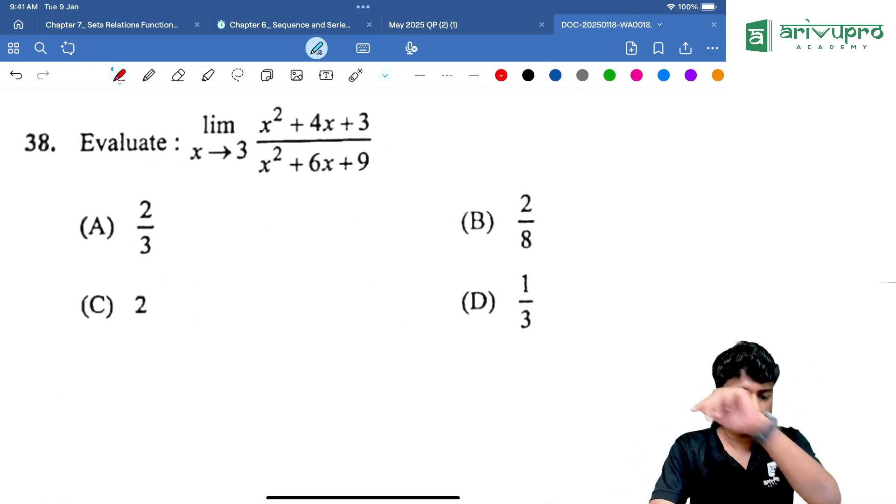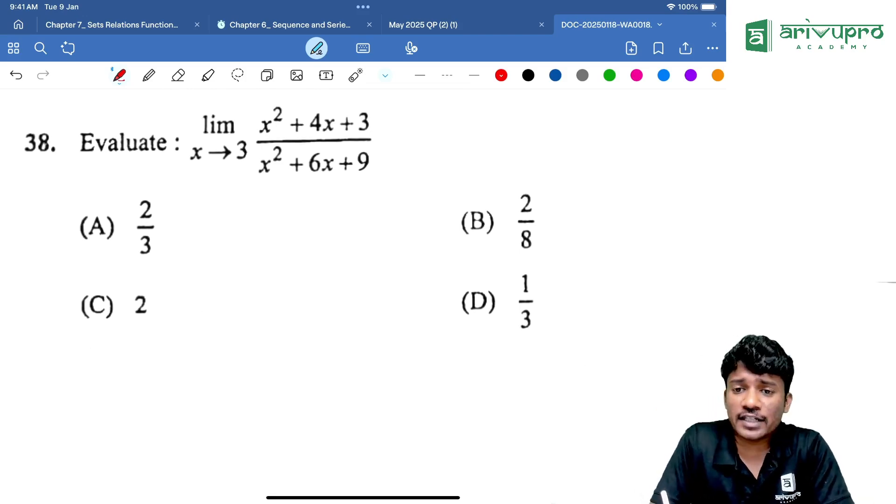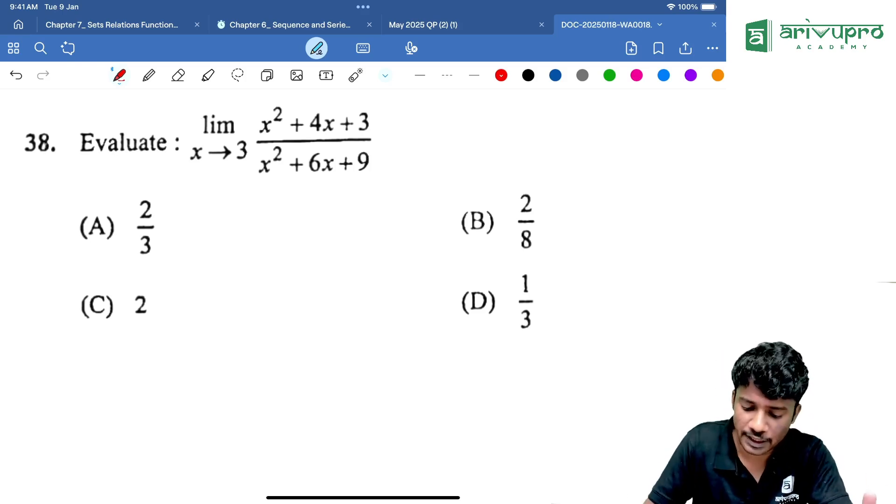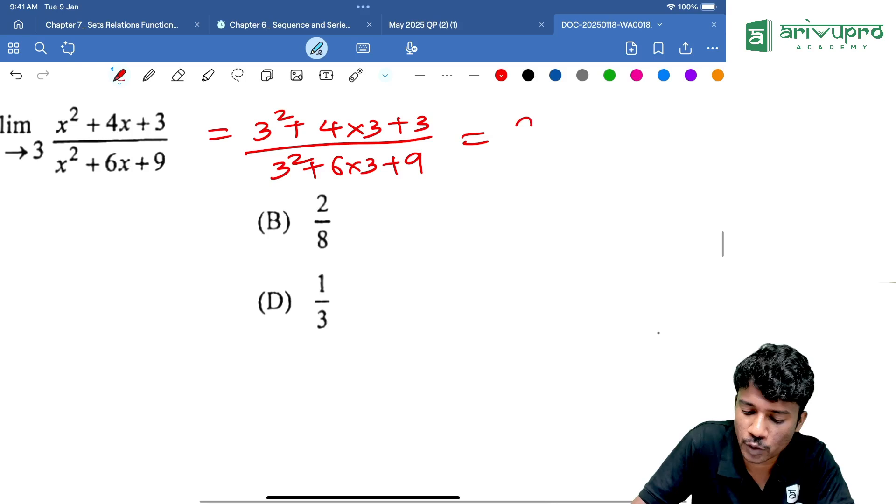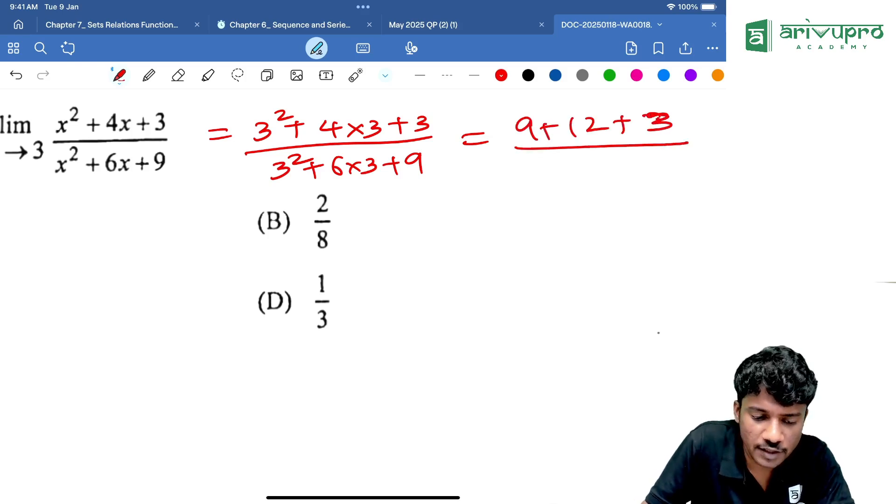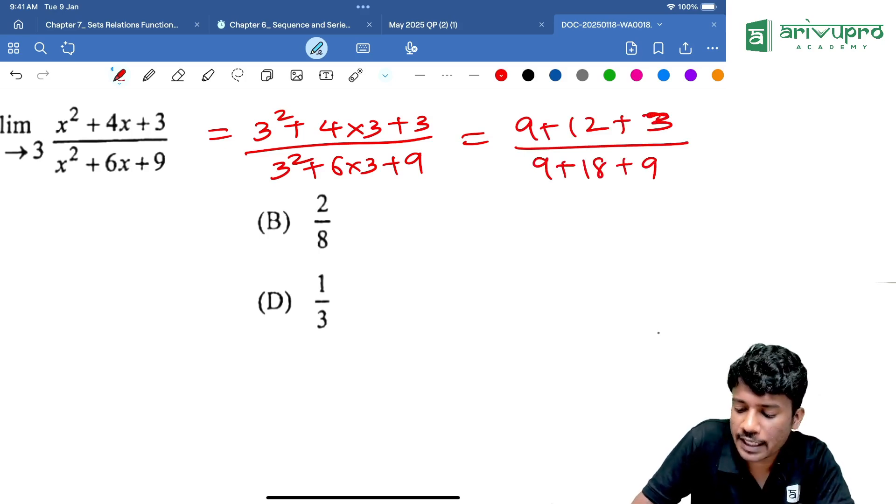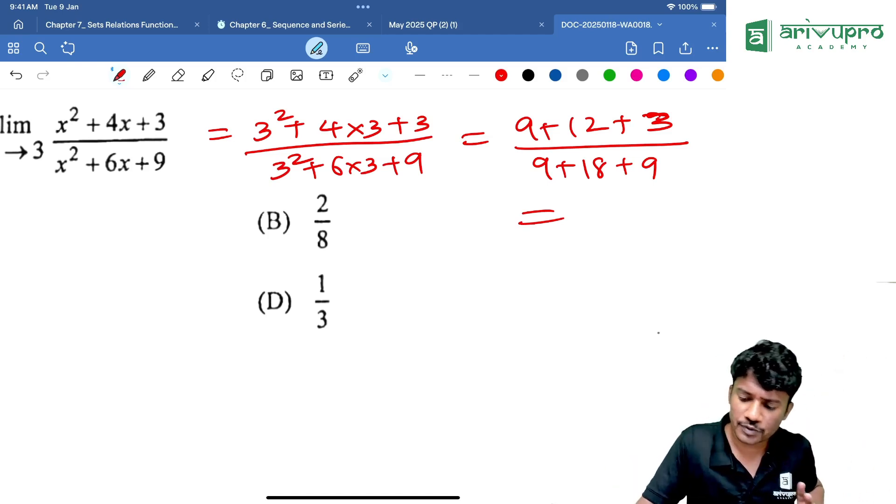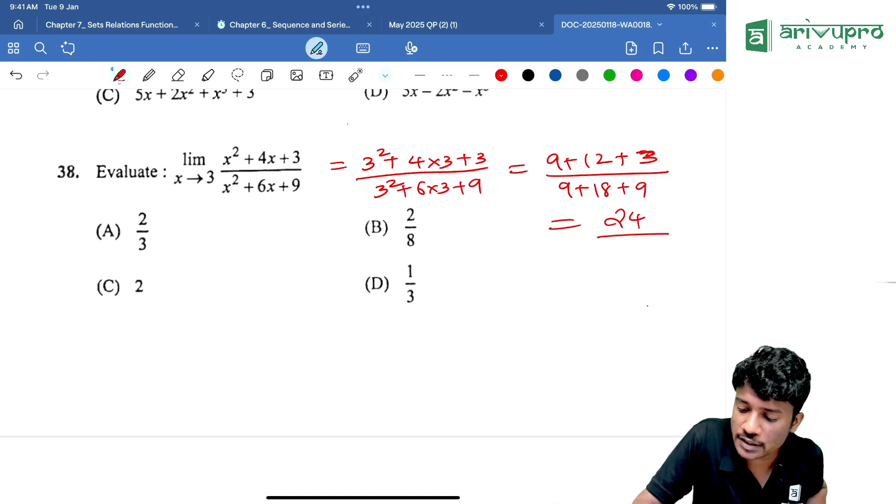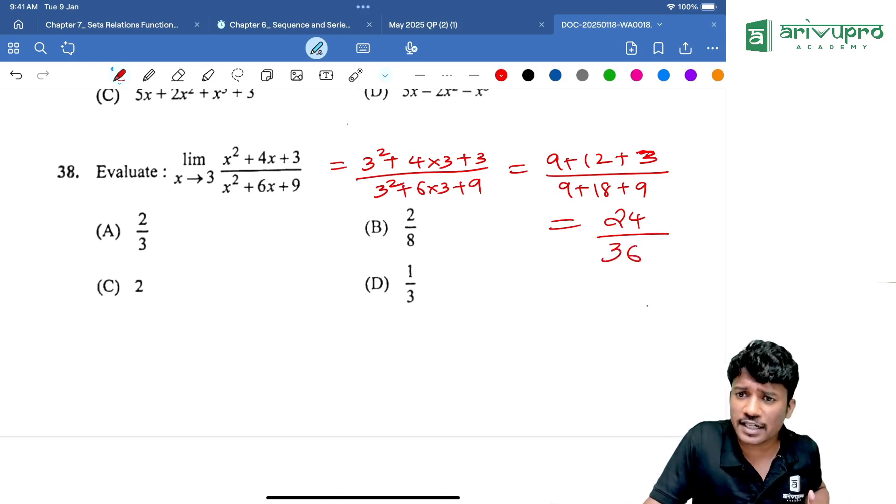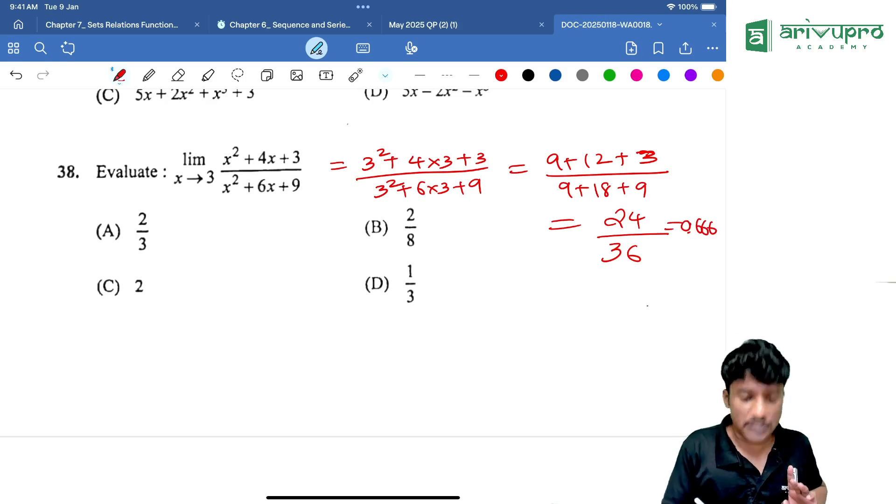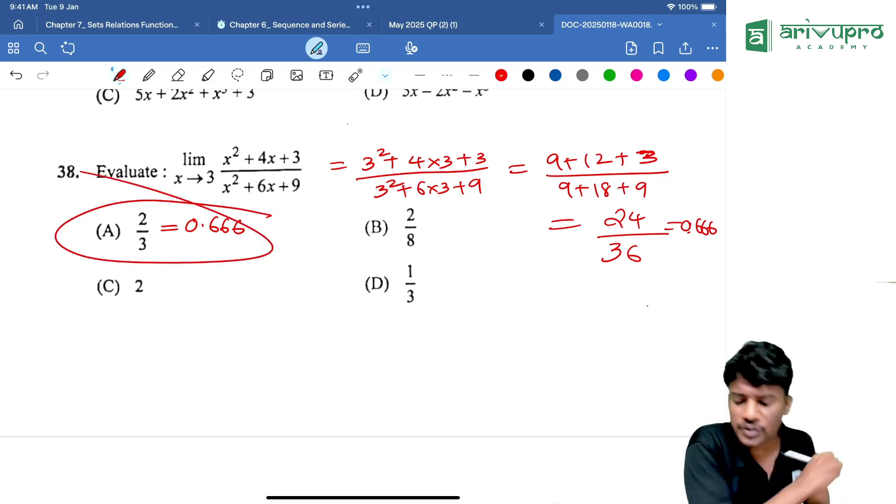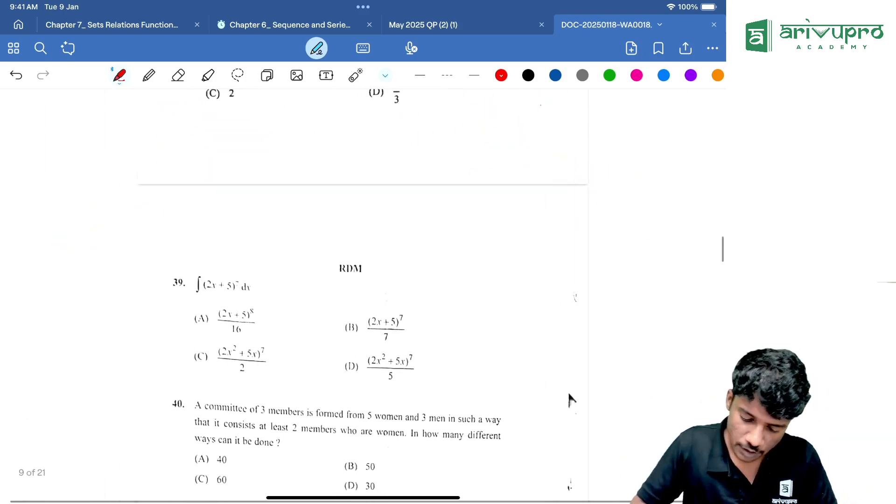Apply this and get me the answer. Is the denominator becoming 0 or infinity directly? No. Since the limit is 3, we can directly apply the limit. So, answer is 3 square plus 4 into 3 plus 3 divided by 3 square plus 6 into 3 plus 9. Which is equal to 9 plus 12 plus 3. The entire thing is divided by 9 plus 18 plus 9. Use calculator. Don't write everything. 24 divided by 36 is 0.666. Which option is giving 0.666? Option E is giving 0.666. Option E is your answer.